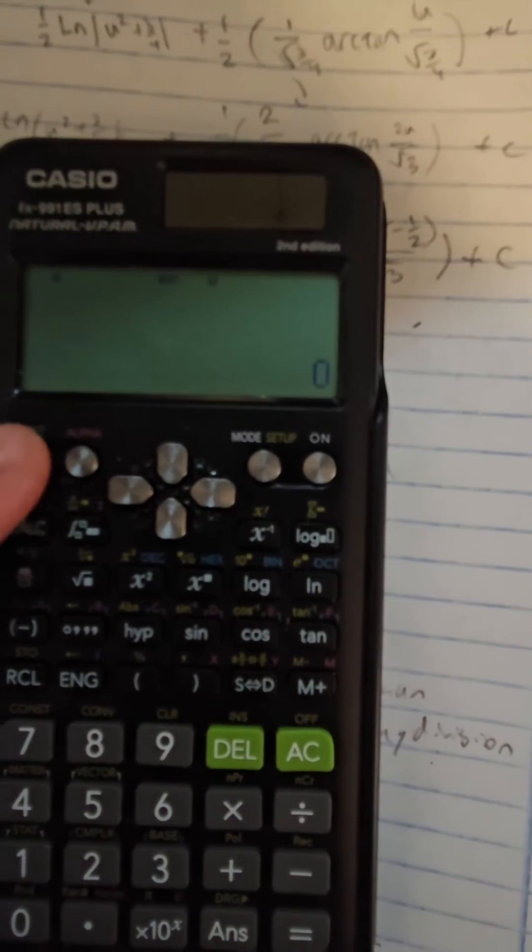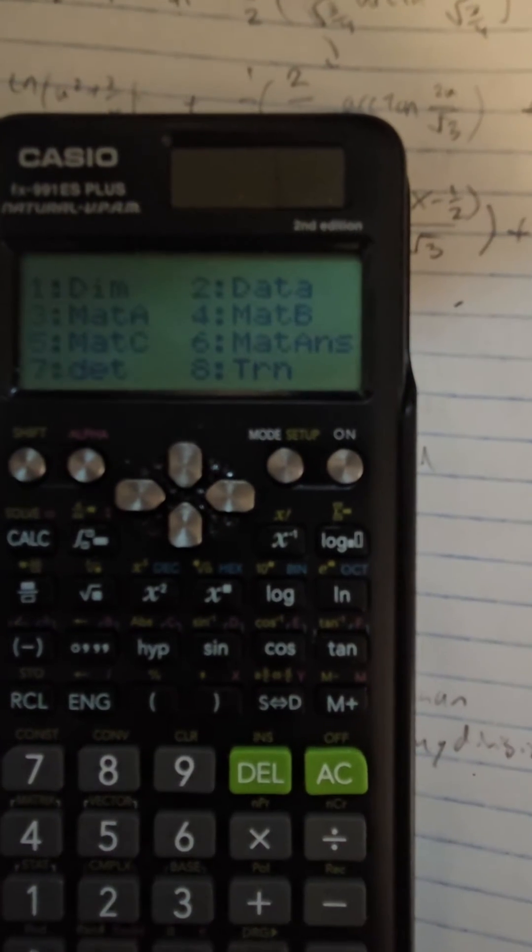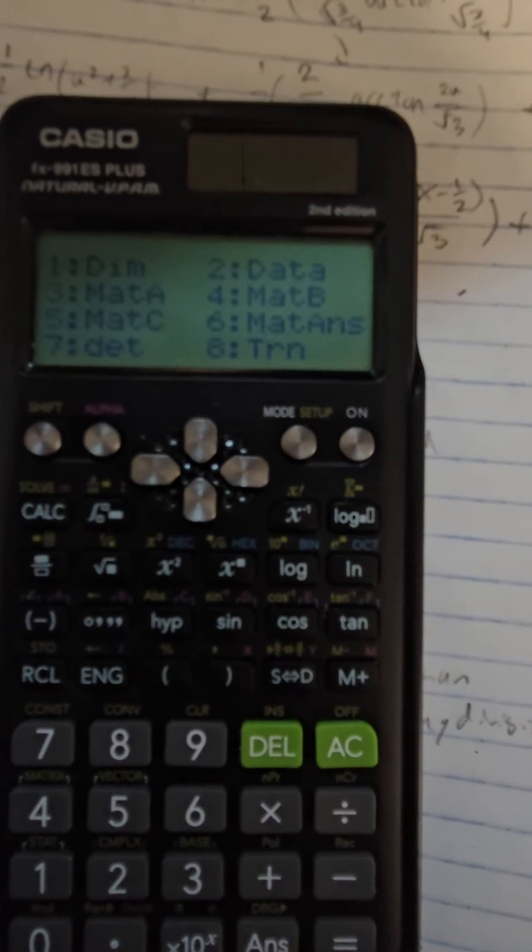Now you'll want to click Shift Matrix, which is number 4. Let's pick Matrix A, which happens to be 3.